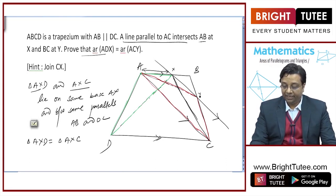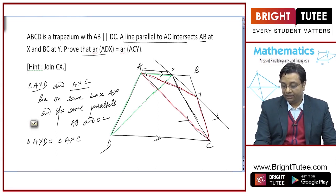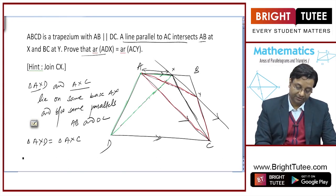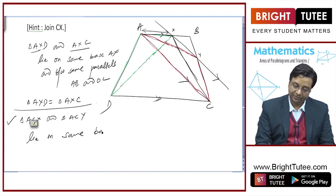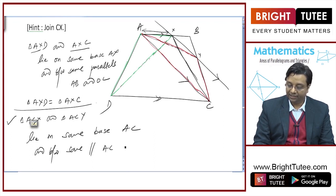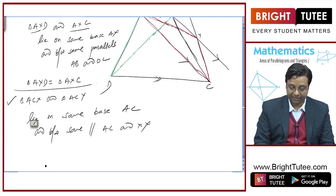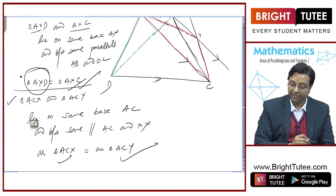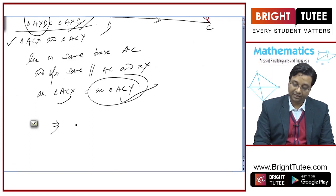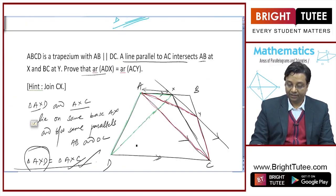Now I need to relate it with area of ACY. Look at these two triangles ACX and ACY. These two triangles lie on the same base AC and between the same parallels AC and XY. Hence their areas are equal. So I can say area of triangle ACX is equal to area of triangle ACY. Now comparing these two results, area of triangle AXD will be equal to area of triangle ACY.